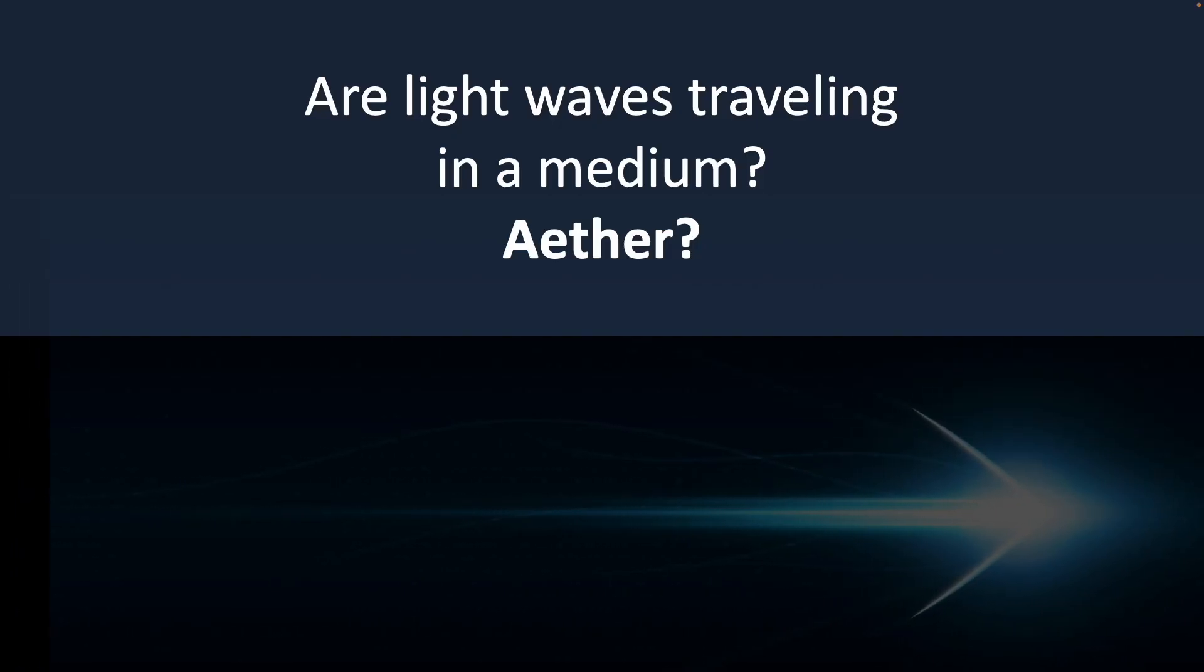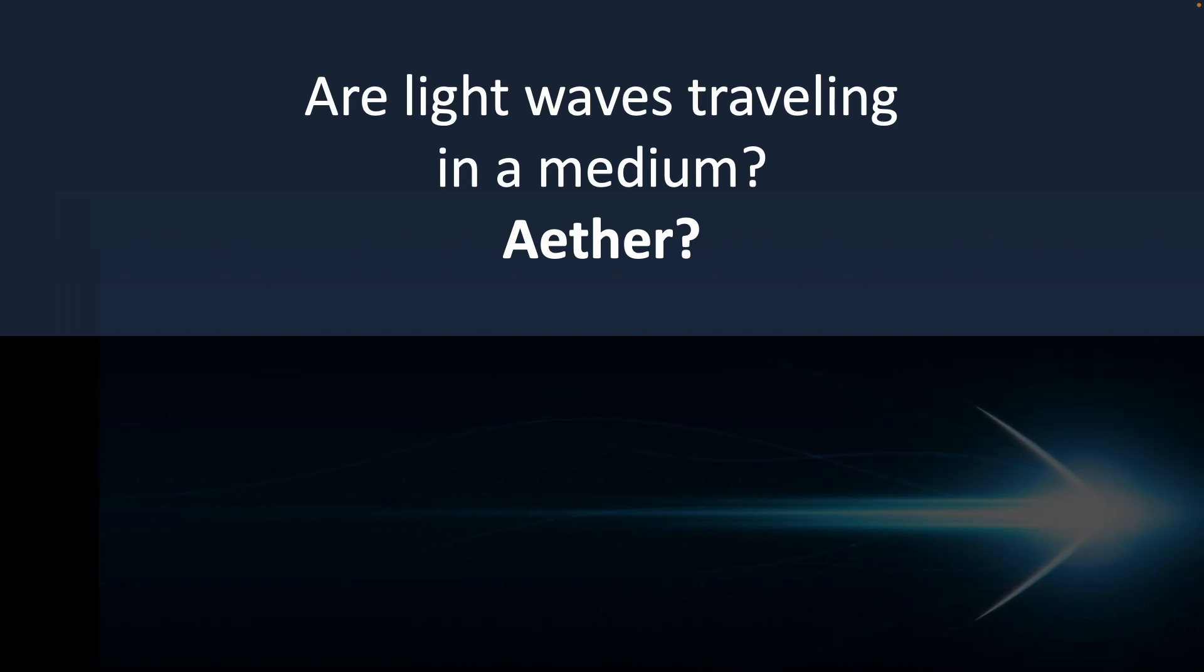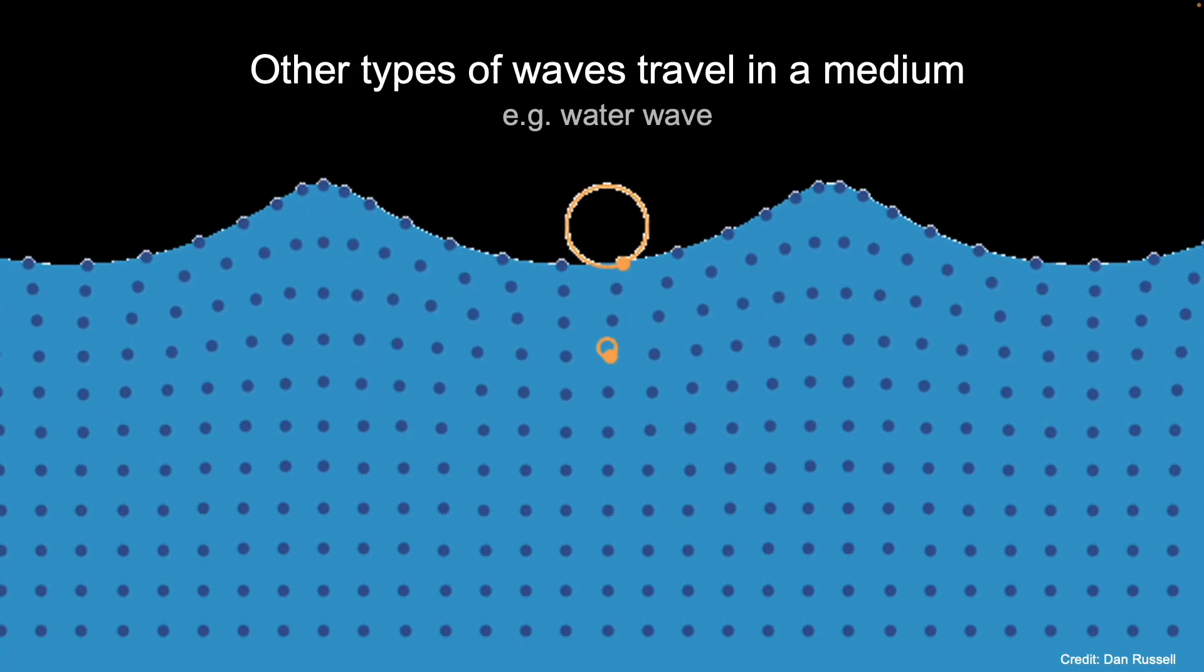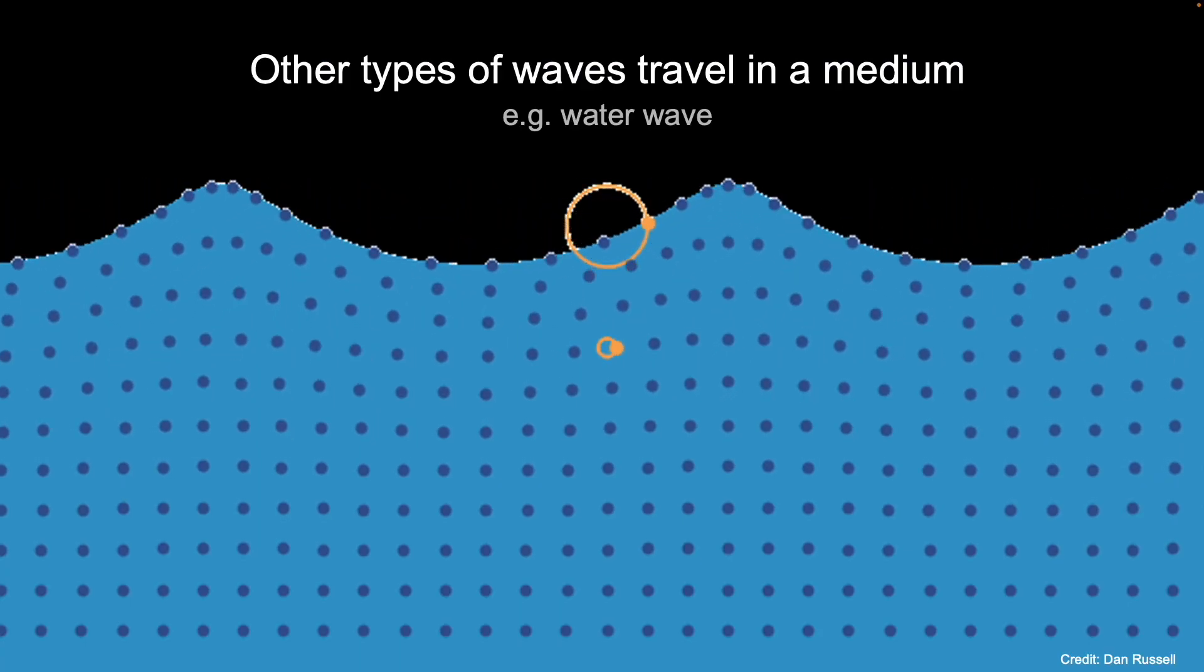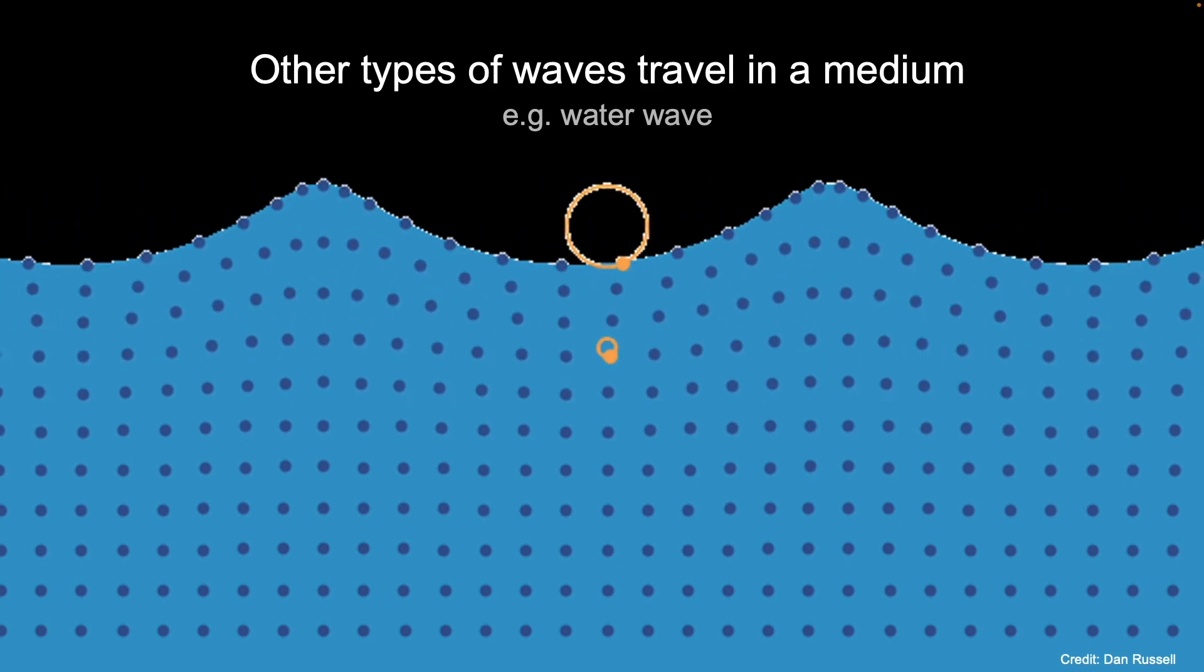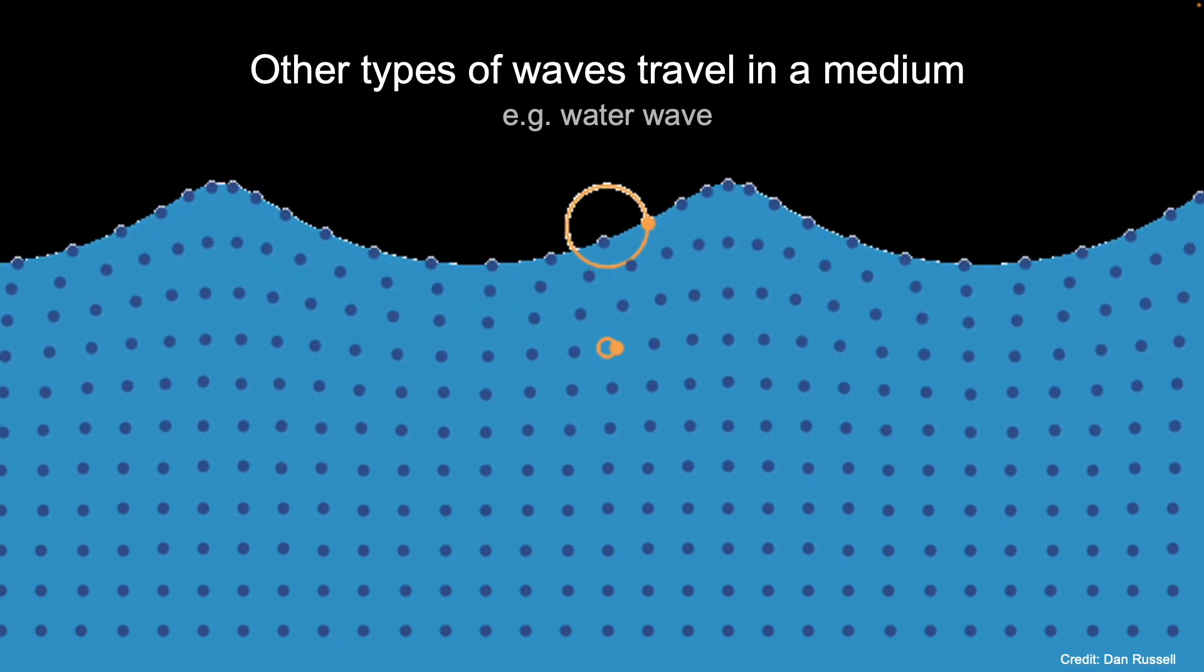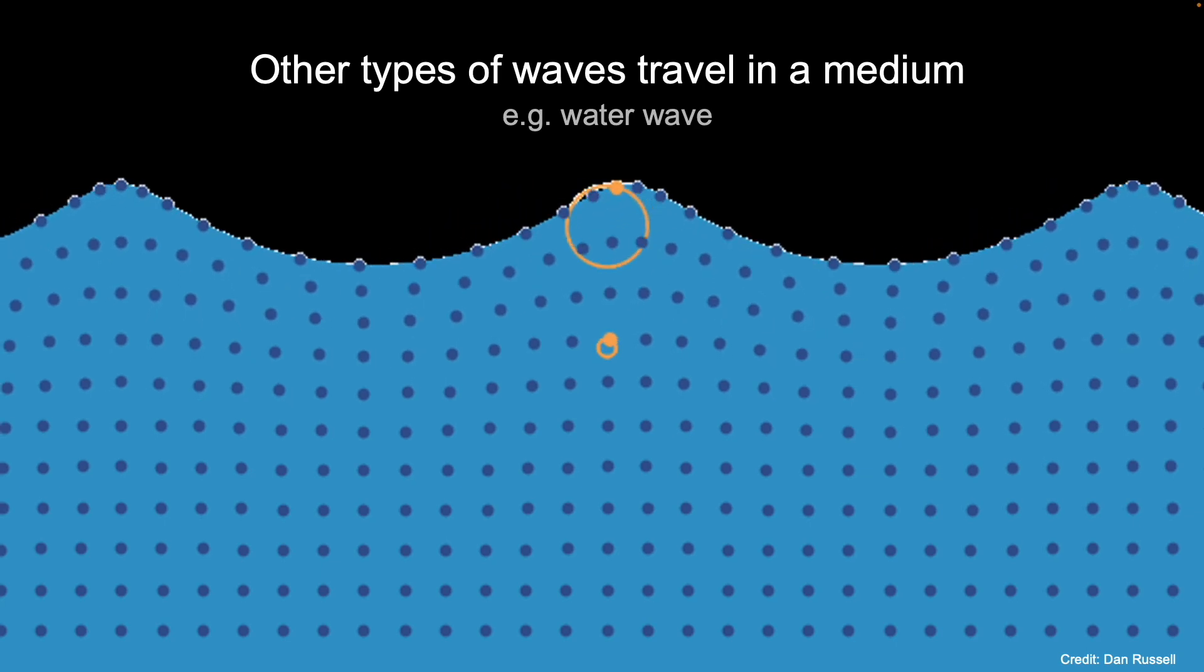Are light waves traveling in a medium, known as the ether or space-time to some? Now, to answer that question, let's look at other types of waves, like a water wave. It's just the vibration of molecules, just like we saw with sound waves.